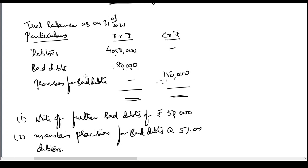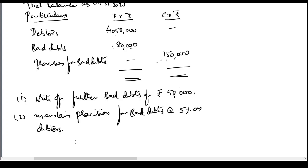Outside the trial balance, additional adjustments are given. First, write off further bad debts of rupees 50,000 — perhaps the auditors or the owner wants another 50,000 written off because the financial condition of a few more debtors has deteriorated and they may not be able to pay on time. Second, maintain a provision for bad debts at the rate of 5% on debtors. These are the adjustments we need to work through.